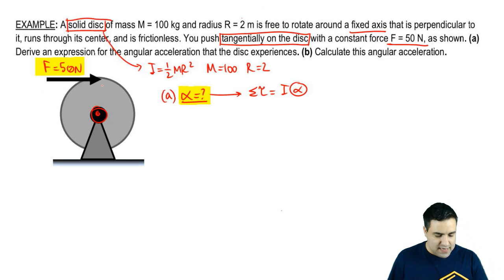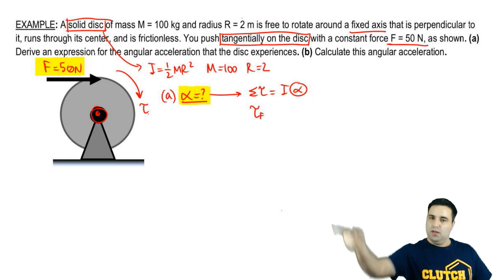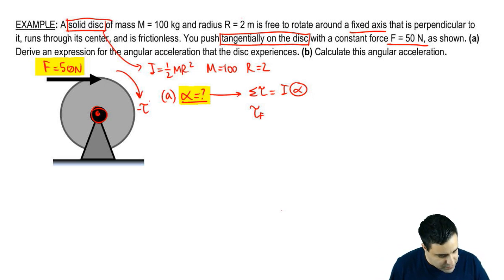Now, the only force that causes a torque, that produces a torque on this disk is this force here. So the only torque we have is going to be the torque of F. Now, that torque, that force is producing a torque that's trying to spin this thing this way, which is a clockwise torque. So it's negative. So I'm going to put a little negative in front.